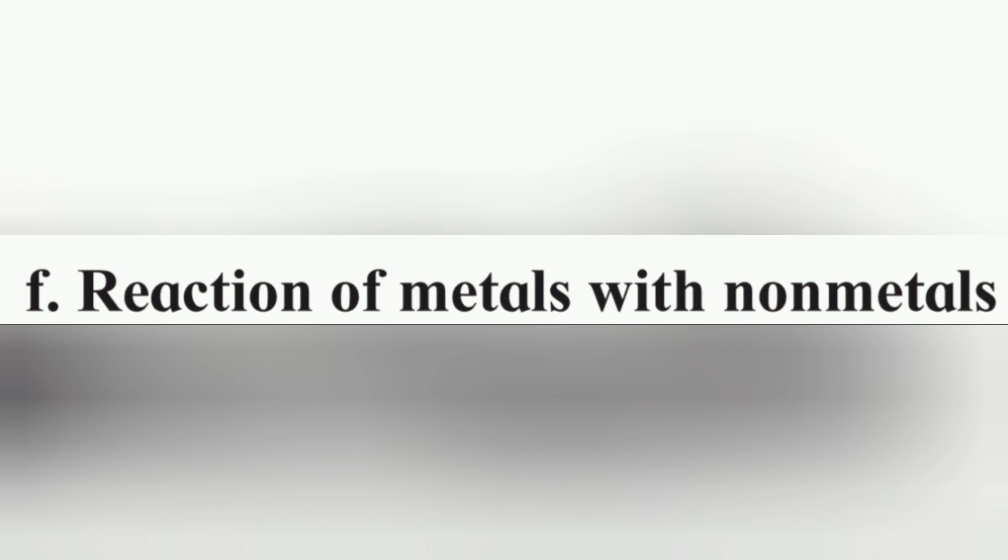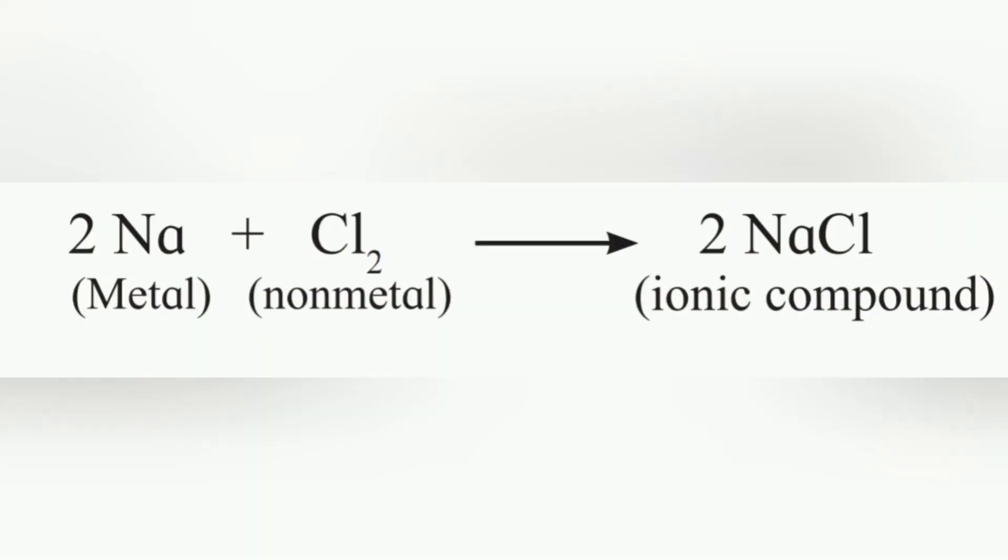The outermost shell of noble gases being complete, they are chemically inert. You have seen in the last standard that the ionic compound sodium chloride is formed as sodium metal gives away one electron while the non-metal chlorine takes up one electron.